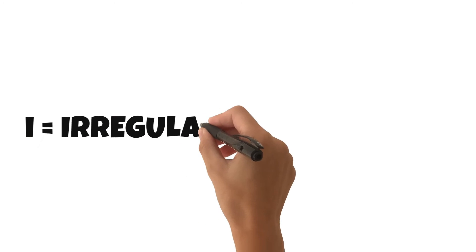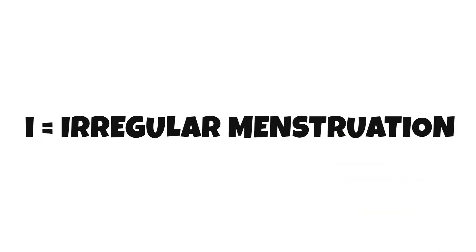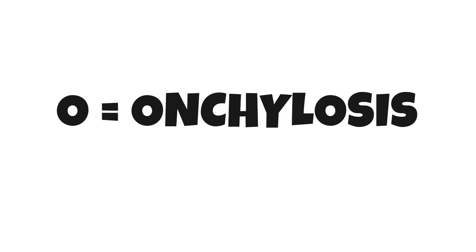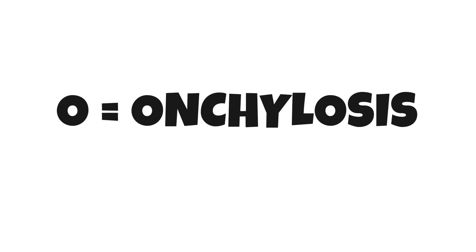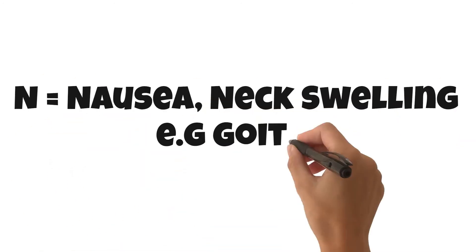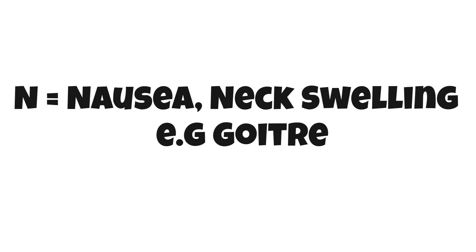I equals irregular menstruation. O equals onycholysis — you can see changes in the appearance of the nails. N equals nausea, and you may also get a neck swelling, for example a goiter.